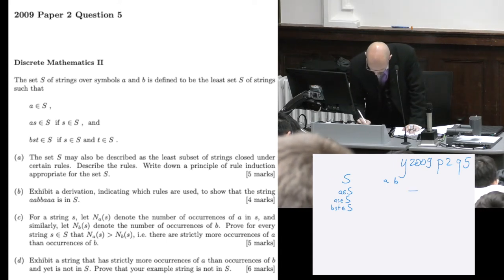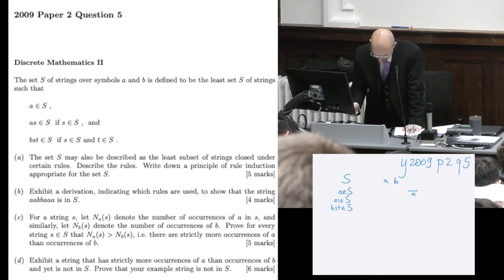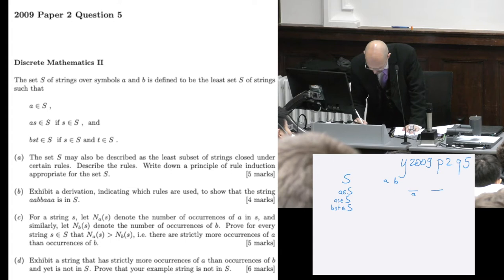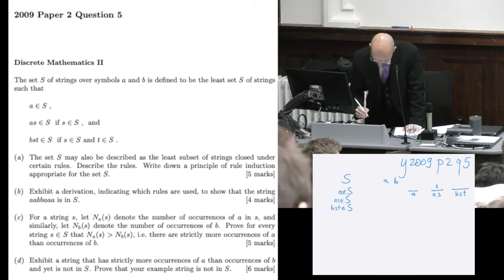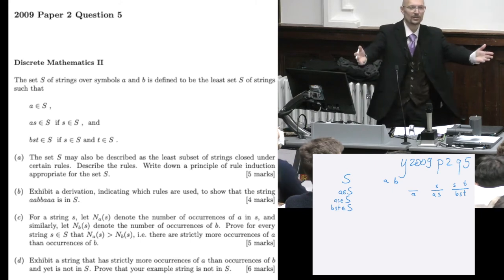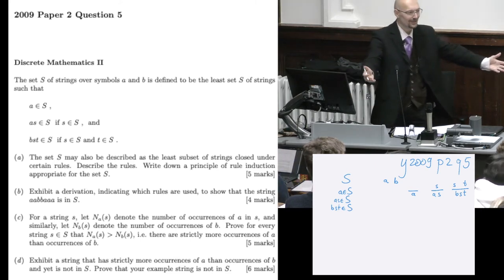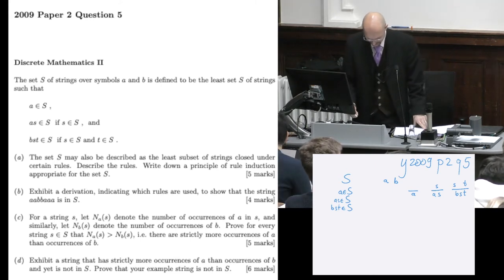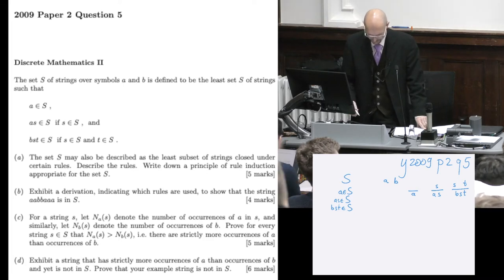So A is in the set, so that's an axiom. AS is in S if S is in S. And BST is in S if S is in S and T is in S. There you go. Five marks, just like that. Isn't that an easy way to earn five marks?